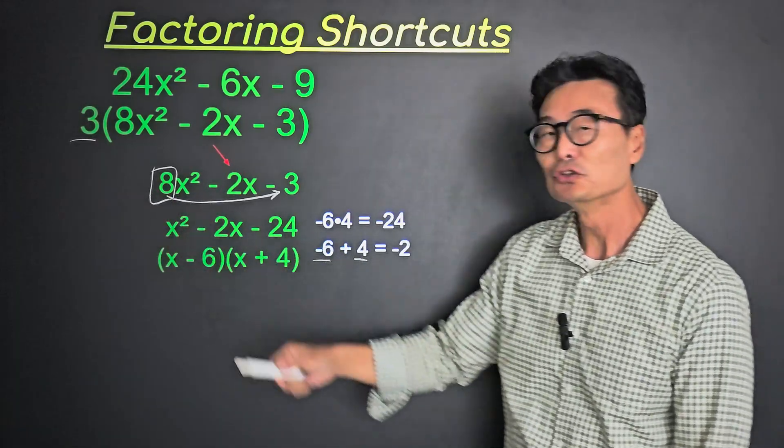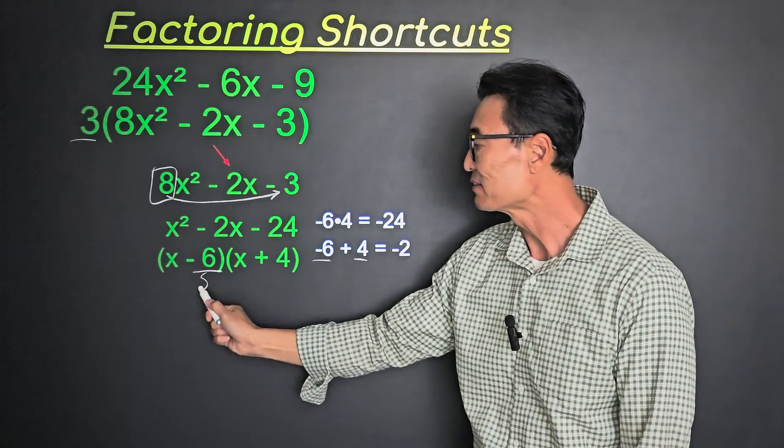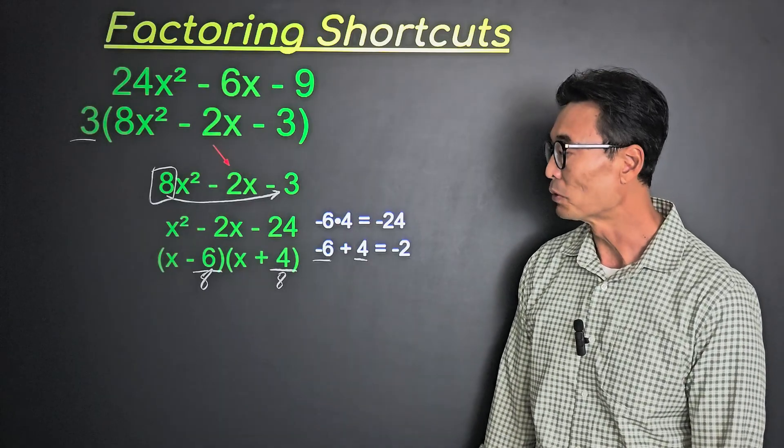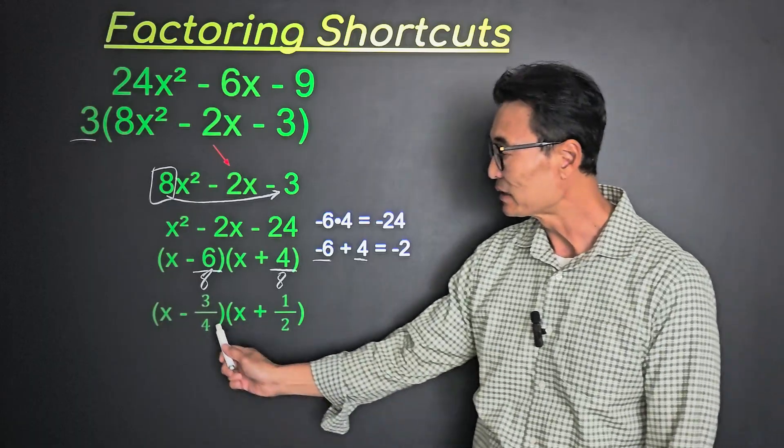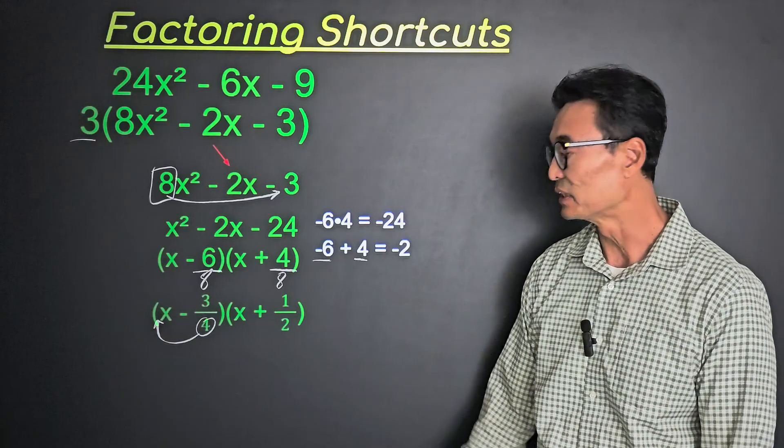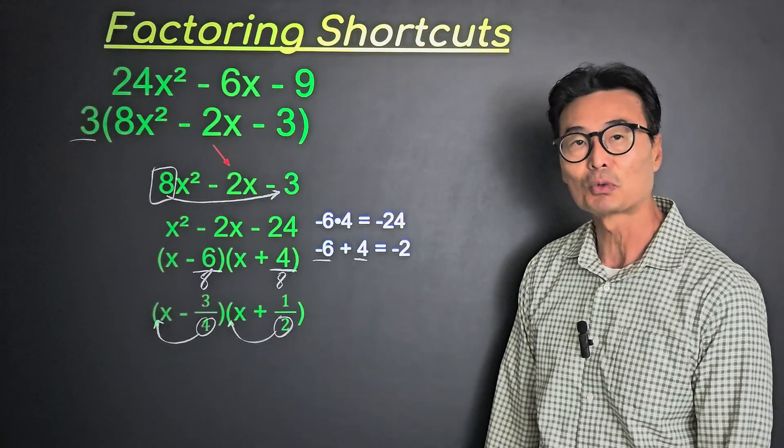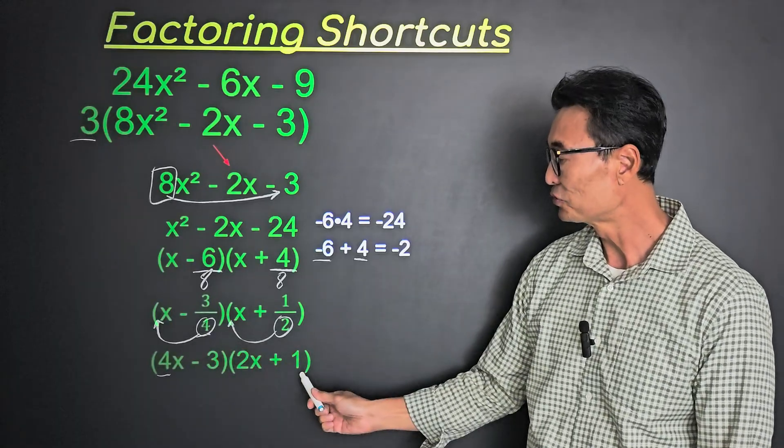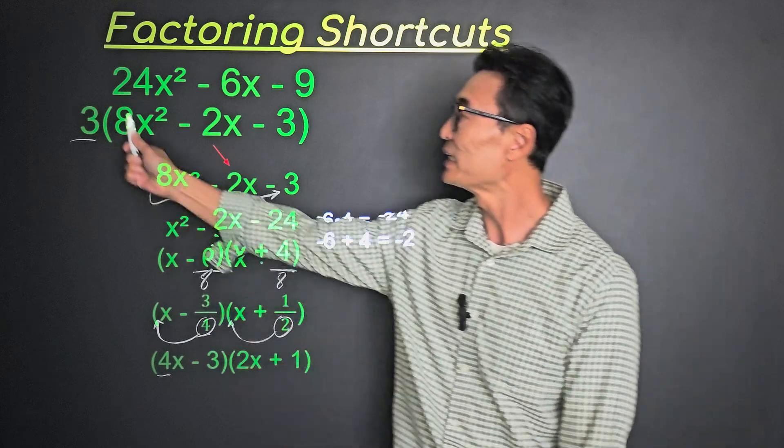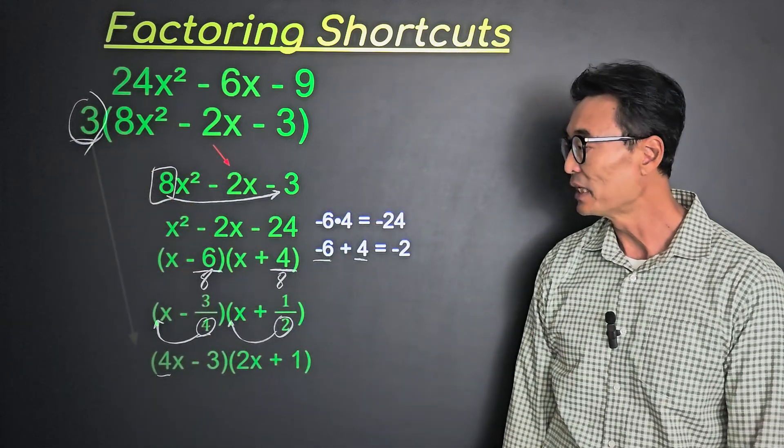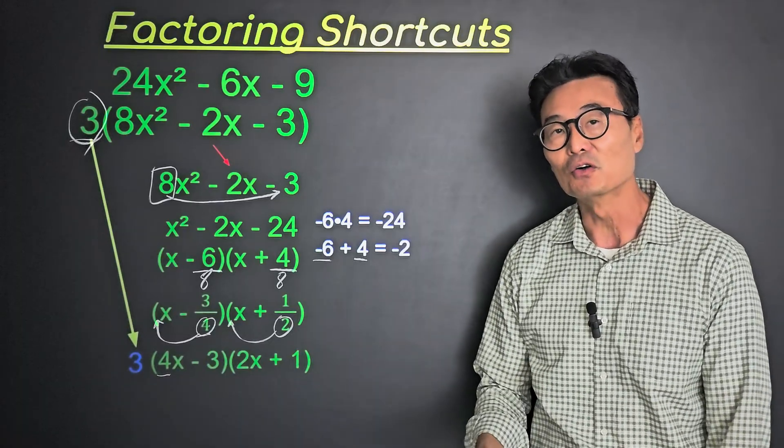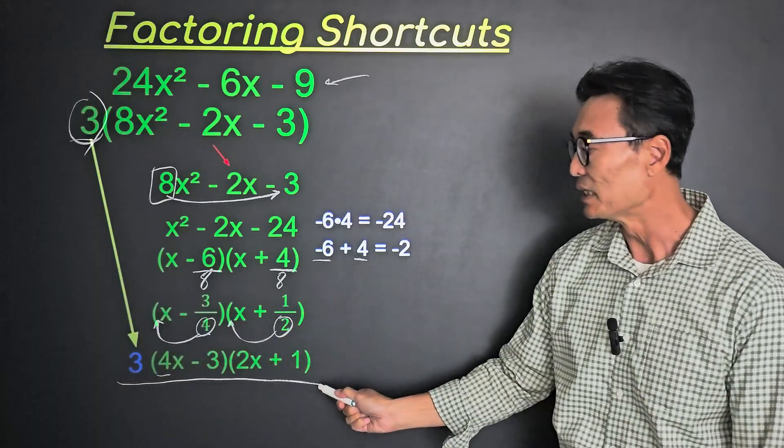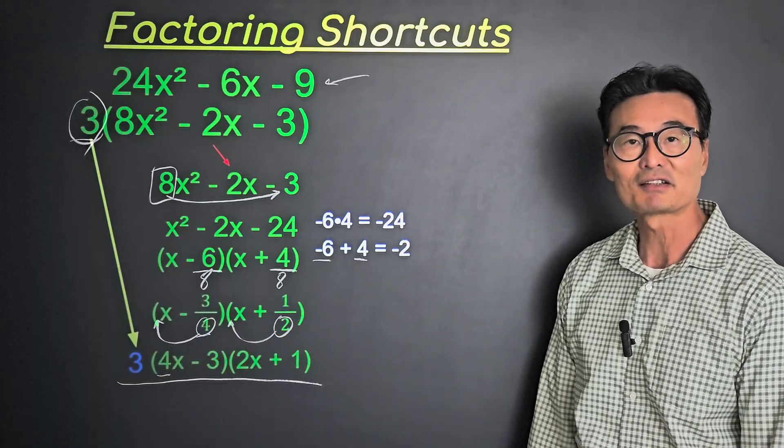Next, that 8 that we used to multiply to the 3, we want to go ahead and divide that 6 by 8 and the 4 by 8 also. Next, go ahead and reduce these two fractions, which will become 3 over 4 and 1 half. Take the denominator, the 4, pack it on or put it in front of the x, take the 2, put it in front of the x, where we end up getting 4x - 3 times 2x + 1. Only thing left to do is to take that 3 that we factored out in the beginning and put it in front of the factor form. Therefore, the final factor form of 24x² - 6x - 9 is 3 times (4x - 3) times (2x + 1).